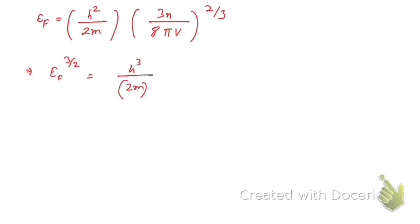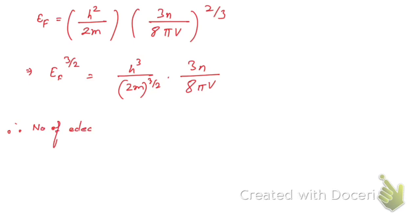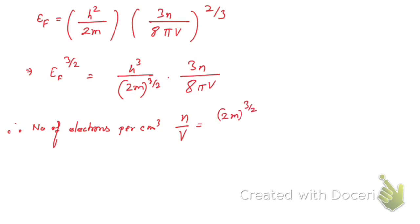We have done this to find N/V, which gives the number of electrons per centimeter cube. Therefore, the number of electrons per centimeter cube, N/V, is equal to (2m) to the power 3/2, into E_F to the power 3/2, then 8π divided by 3h-cubed.